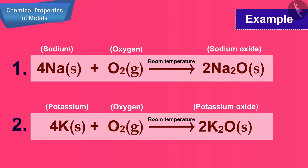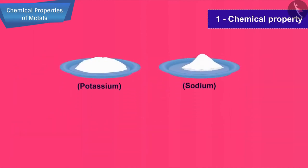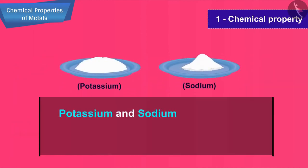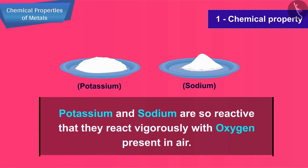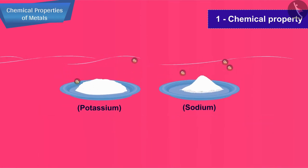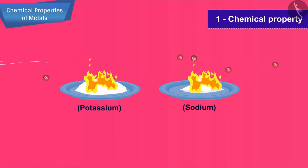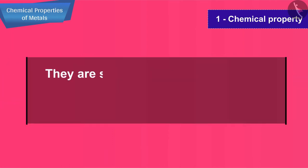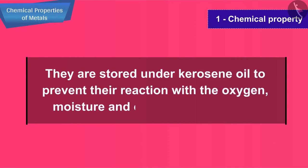There is also an interesting fact about these metals. Potassium and sodium are so reactive that they react vigorously with oxygen present in air. They catch fire and start burning when kept open in the air, and this is the reason why they are stored under kerosene oil to prevent their reaction with the oxygen, moisture and carbon dioxide of air.